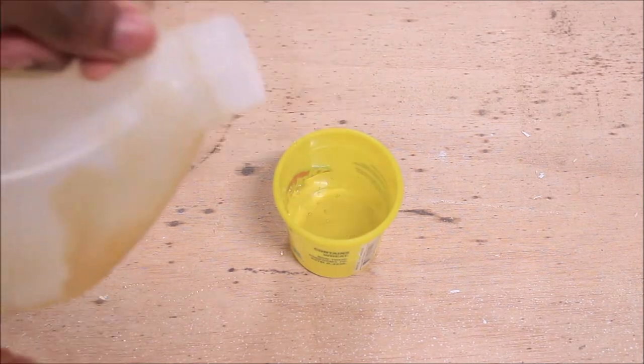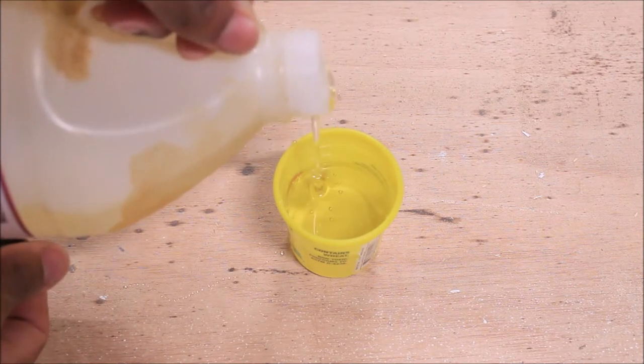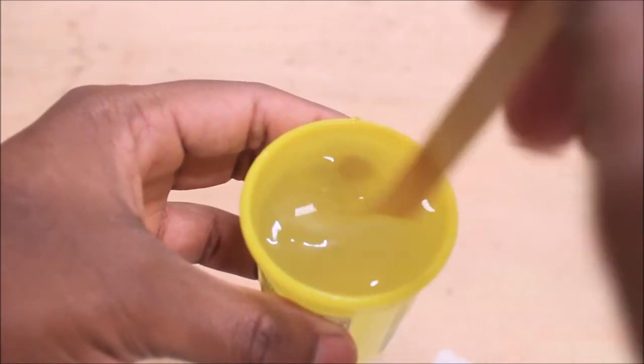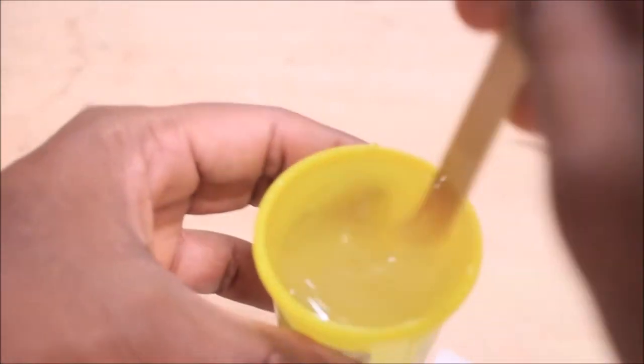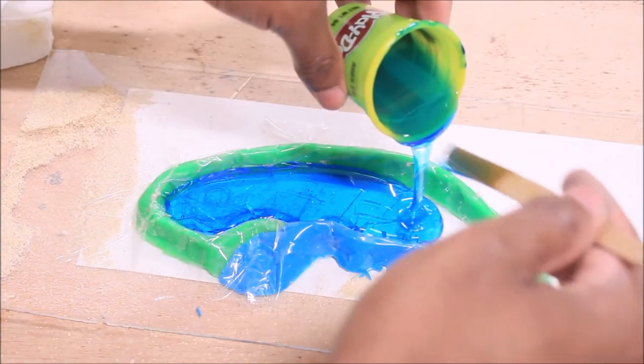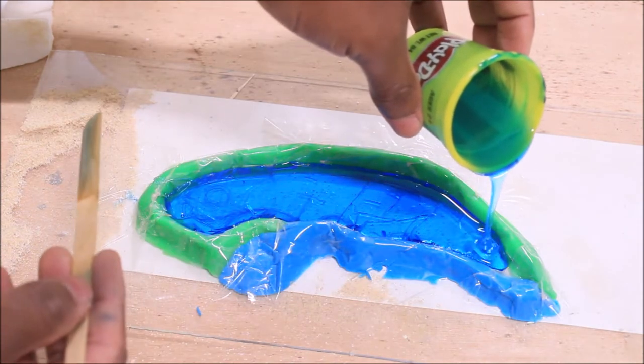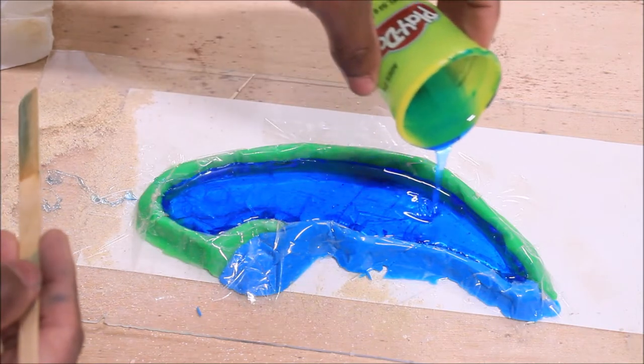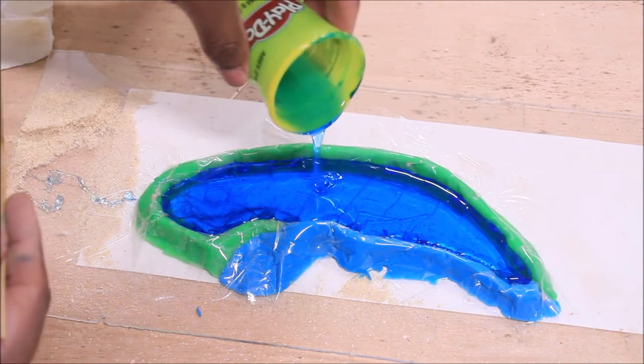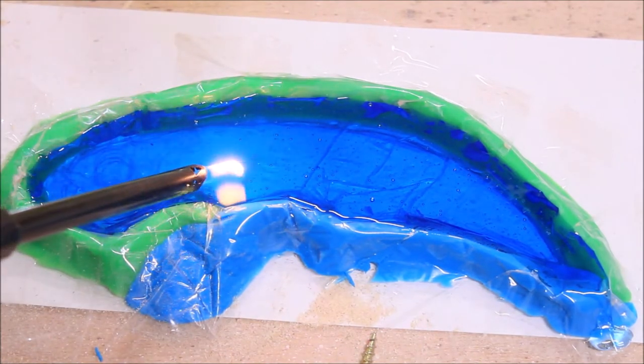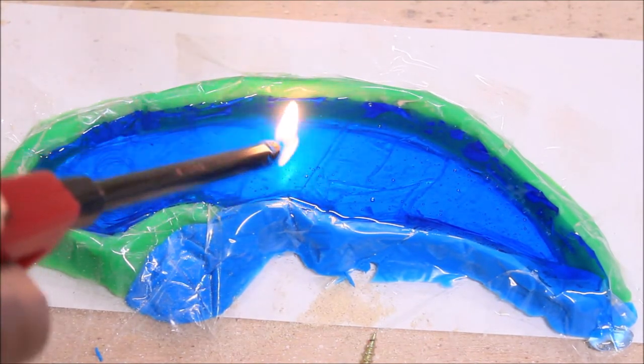I used a two part epoxy mix and then I added the dye to it to give it a clear blue color. And I'm just using the lighter to pop any bubbles in the epoxy.